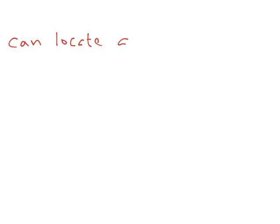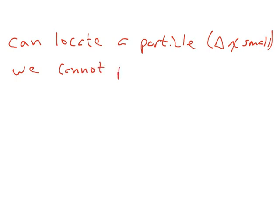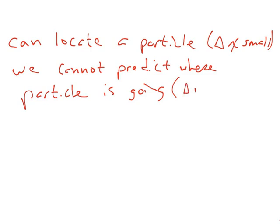We cannot simultaneously know where the particle is and where it's going — that's the Heisenberg Uncertainty Principle. If we can locate a particle with a small delta x, we cannot predict where it is going. If you could take a picture of an electron, you'd have its particle location defined, but you'd have no idea which direction it was going. The opposite is also true: if you know where the particle is going, you have no idea where it is.